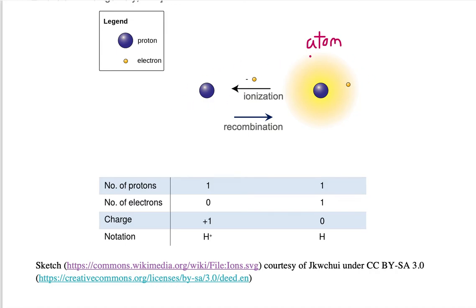Whenever we go from an electrically neutral atom into individual parts—a proton and electron—that process is called ionization.